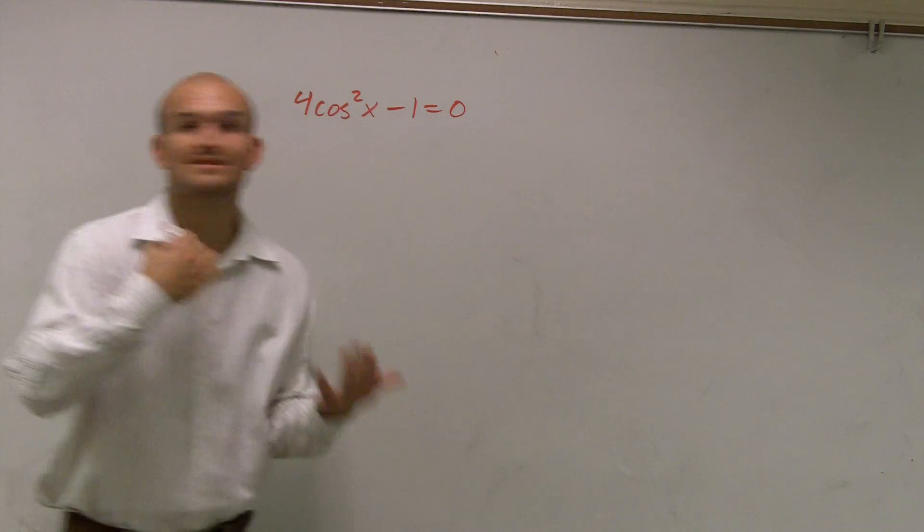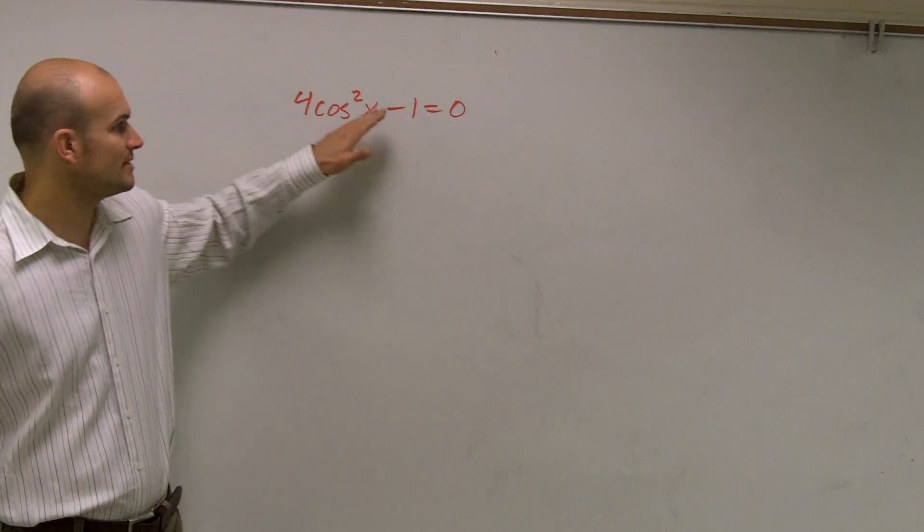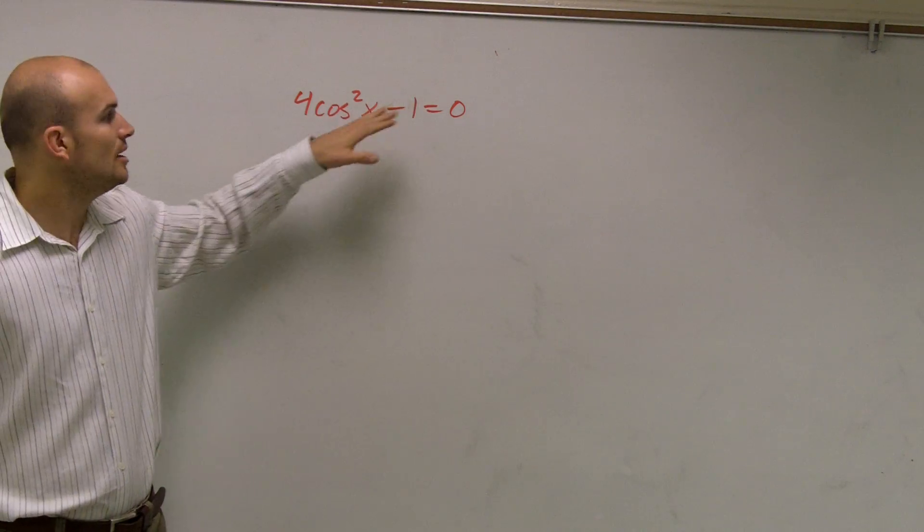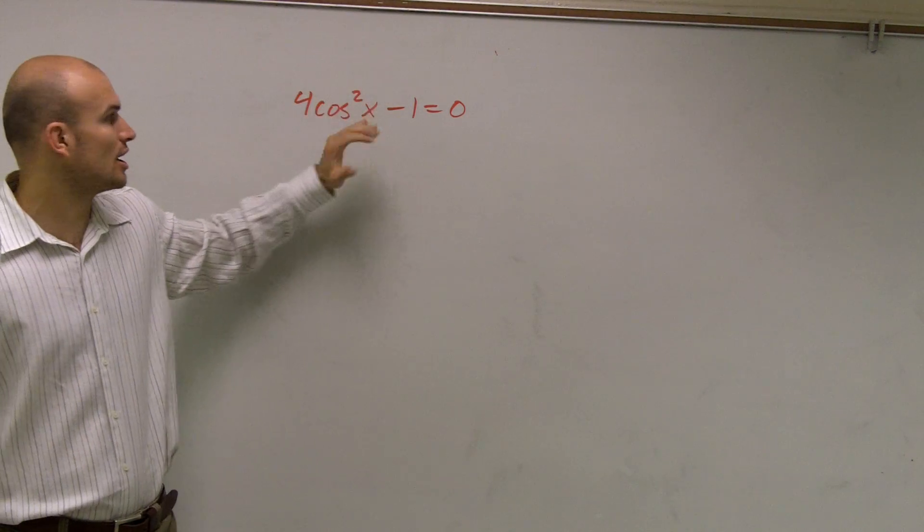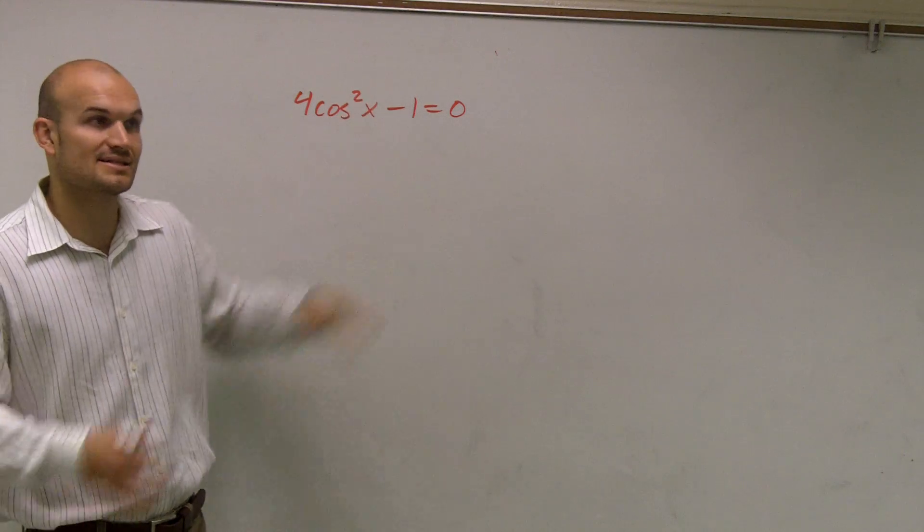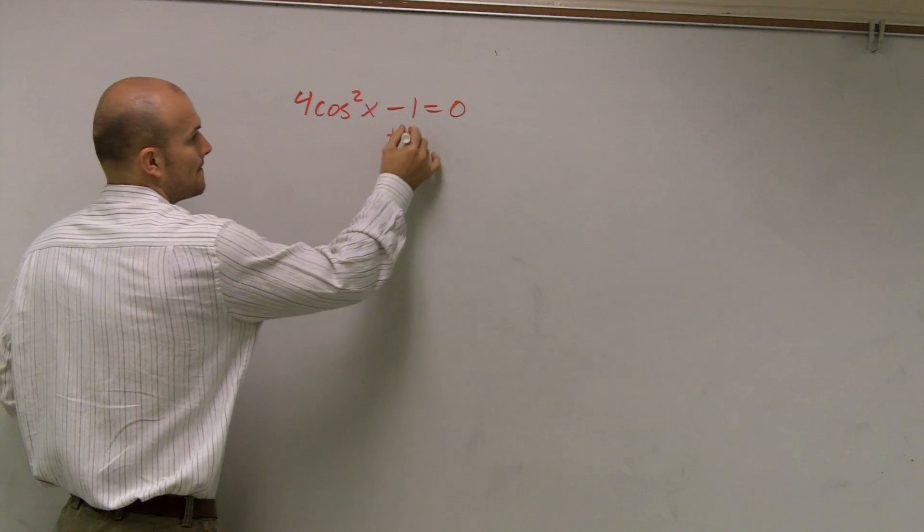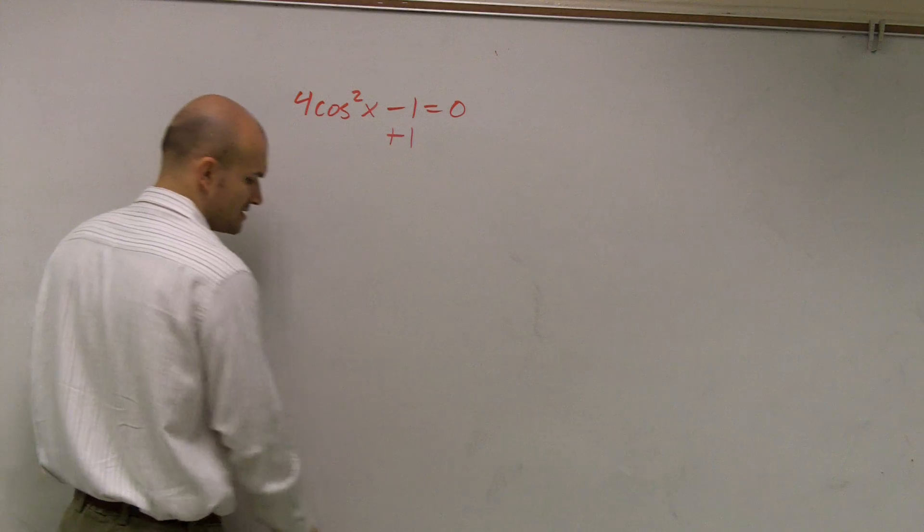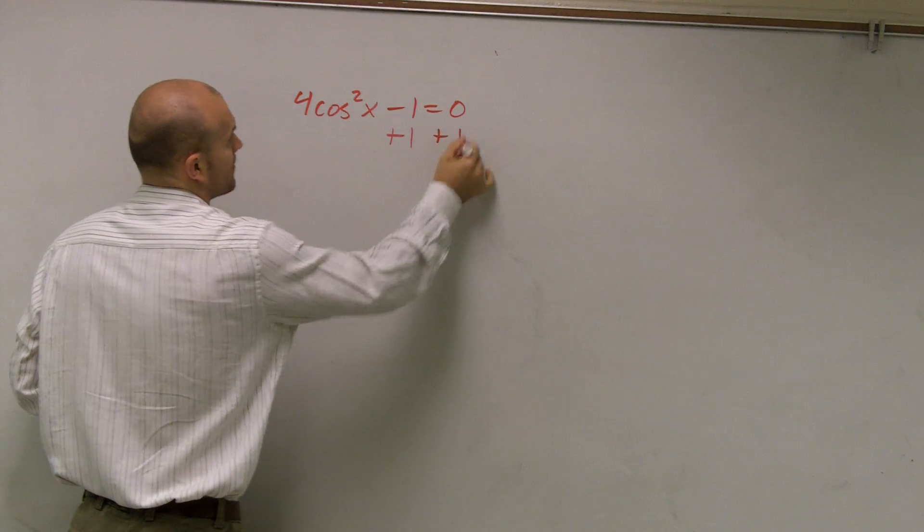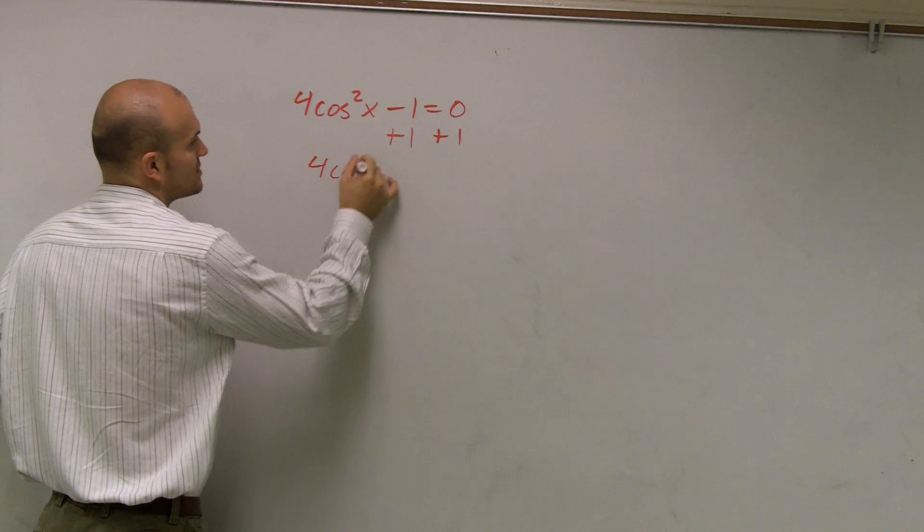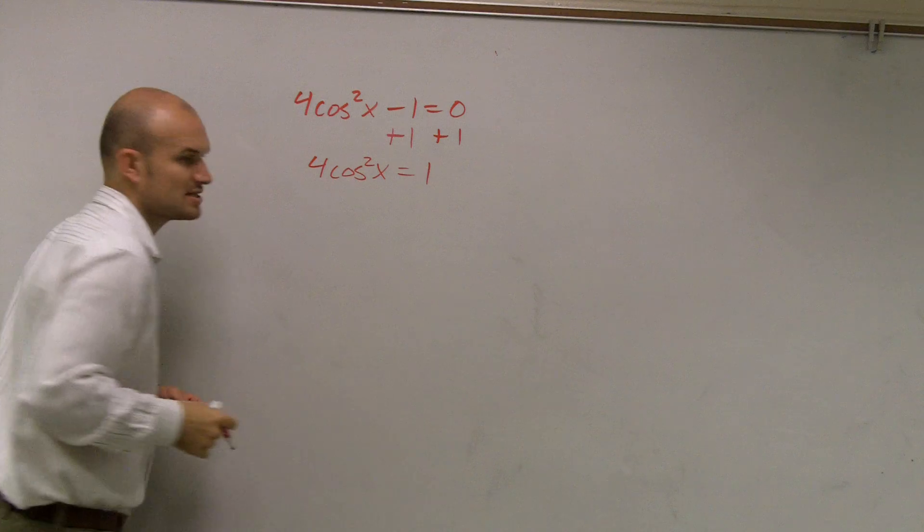For this problem, it's going to be the exact same thing. We see we have a square here. What we're going to do is get our trig function by itself. I'm going to get rid of this one by adding 1 to both sides. So then I have 4 cosine squared x equals a positive 1.